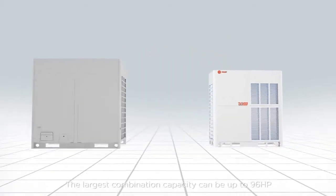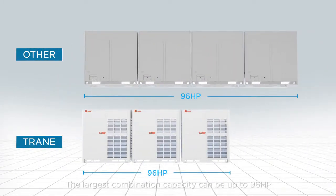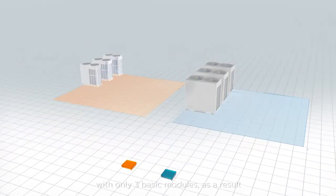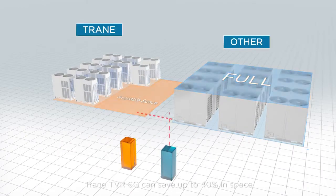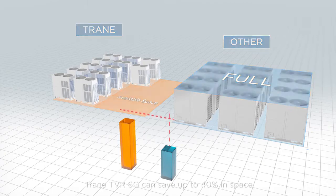The largest combination capacity can be up to 96 HP with only 3 basic modules. As a result, with the same capacity range, TrainTVR 6G can save up to 40% in space.